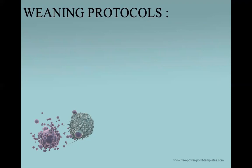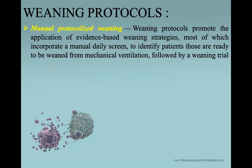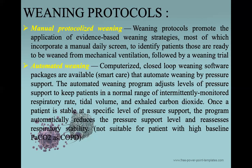There are weaning protocols: either manual protocolized weaning or automated weaning. Manual protocolized weaning promotes evidence-based strategies incorporating a daily manual screen for every patient on mechanical ventilation to identify those ready to be weaned, followed by a weaning trial. Automated weaning uses computerized closed-loop weaning software, available in some ventilators under the name 'Smart Care,' which automates weaning by pressure support. The automated program adjusts the level of pressure support to keep the patient within a normal range of respiratory rate, tidal volume, and exhaled carbon dioxide.